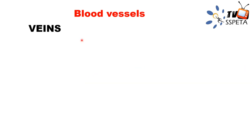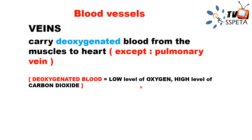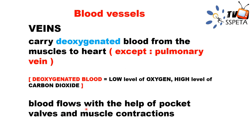The next blood vessel is veins. Veins carry deoxygenated blood — blood with very low oxygen and high carbon dioxide — from muscles back to the heart. All veins carry deoxygenated blood except the pulmonary vein, which carries oxygenated blood from the lungs to the heart. In veins, blood flows with the help of pocket valves and muscle contraction.